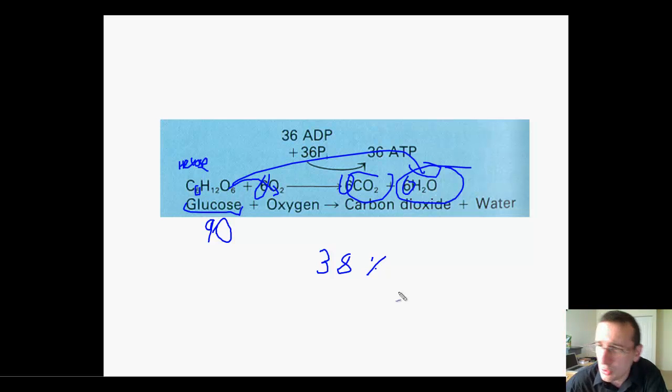The cell actually makes 38% efficiency at capturing the energy that's inside the glucose to power up our lives. And so, most human engines, even the better ones, are less than 30% efficient. So, this is a natural process that's better than most engines that are burning things like diesel and gasoline.